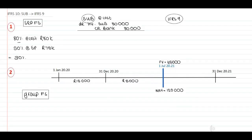Step number one: we've identified that originally this is a subsidiary at 80% shares, then they sell 50%, therefore it is now a normal IFRS 9 investment. We need to apply IFRS 10. Step number two: let's look at our timeline. In the separate records of Entity A, Entity A will have to recognize the subsidiary at cost in terms of IAS 27. Looking at our timeline, the pink portion represents the subsidiary period.